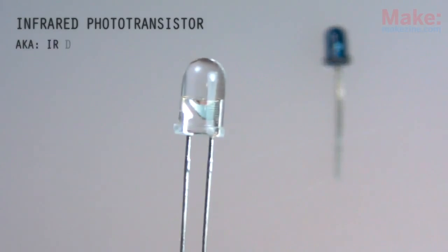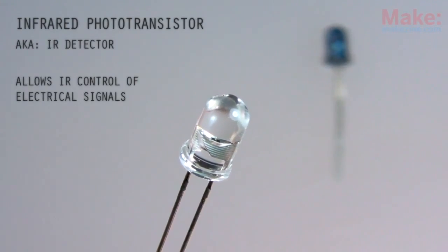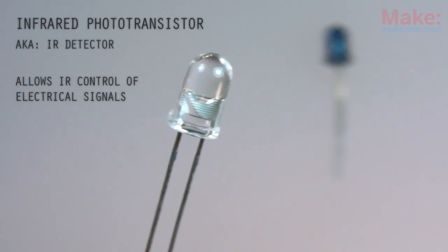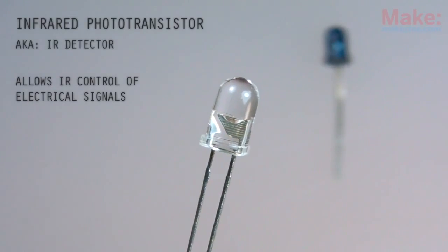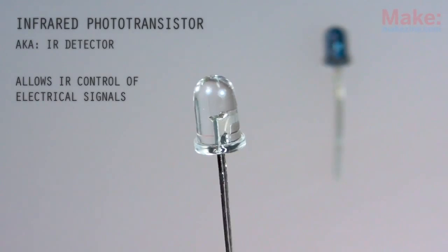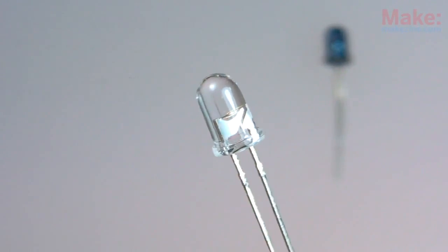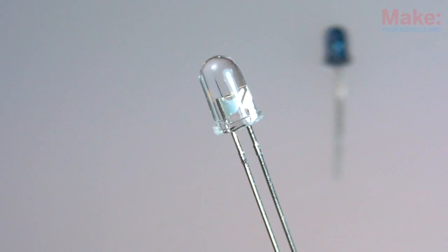Infrared light can be detected using an IR photo transistor. These look really similar to LEDs, but they work in almost the opposite way. When infrared light strikes the chip inside the lens, electricity is allowed to flow from one lead to the other.